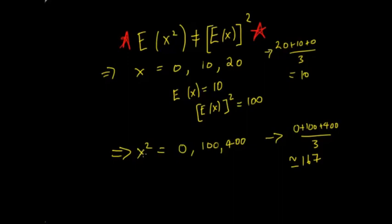What happens if you square the outcomes first and then work out the average? You get 0 because 0 squared is 0, 10 squared is 100, and 20 squared is 400. Add them together and divide by 3, and you get 500/3, which is approximately 167. So these are not equal.